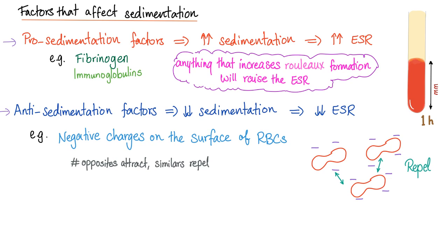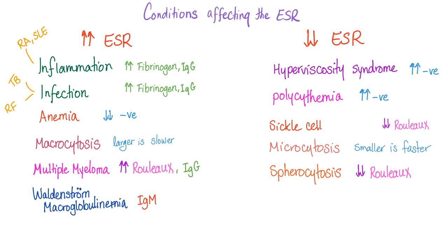What are the factors that affect sedimentation? We have pro-sedimentation factors and anti-sedimentation factors. Pro-sedimentation factors increase sedimentation and raise ESR — such as fibrinogen and immunoglobulins. Anti-sedimentation factors are the negative charges on the red blood cell surface; since similar charges repel, they resist settling. Conditions that increase ESR include inflammation and infection due to fibrinogen and IgG.